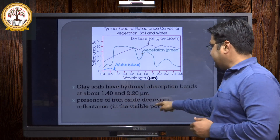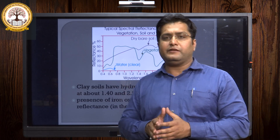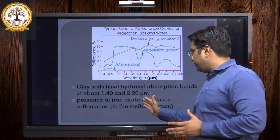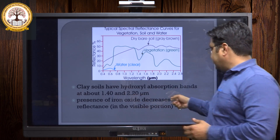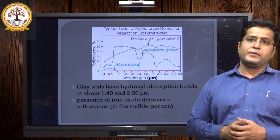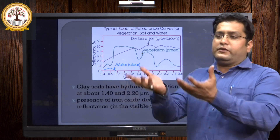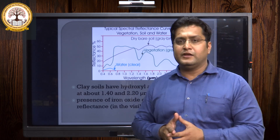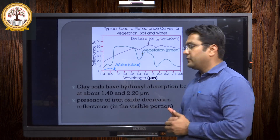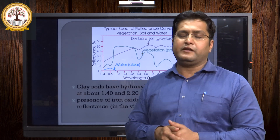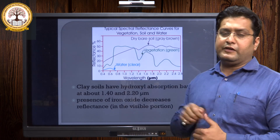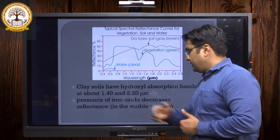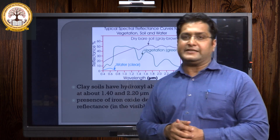The presence of iron oxide decreases reflectance. If we identify soil containing some amount of iron oxides, the presence of iron oxides decreases the reflectance in the visible portion. In those areas with high amounts of iron oxide in the soil, when we draw a spectral reflectance curve using a radiometer or spectrometer, we will find the spectral reflectance characteristic will be lower in those areas.